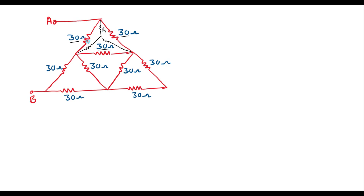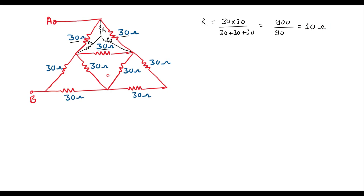Let me call this as R1, this as R2, and this as R3. So let me find R1, R2, R3 values. R1 is equal to 30 into 30 divided by 30 plus 30 plus 30. That is 30 into 30 divided by 90, which gives 900 divided by 90, which is nothing but 10 ohms. R2 is also the same value because all delta values are the same, so R1, R2, R3 values will all be 10 ohms.